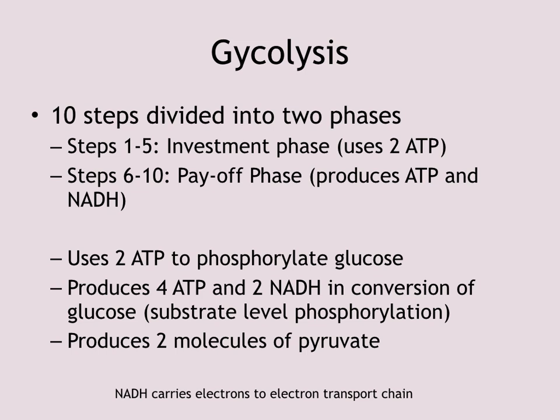In the investment phase, we contribute two ATP to the process. In steps six through ten — the second half of glycolysis — we get back those two ATP and make two more. The gross payoff in glycolysis is four ATP, but since we invested two to begin with, our net profit is two ATP. Two ATP is not a lot, so glycolysis alone cannot sustain the cell for a long period of time.